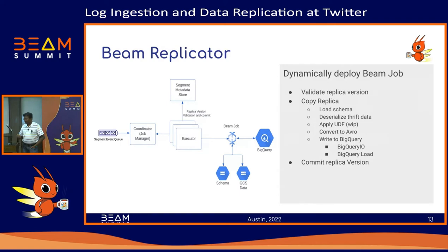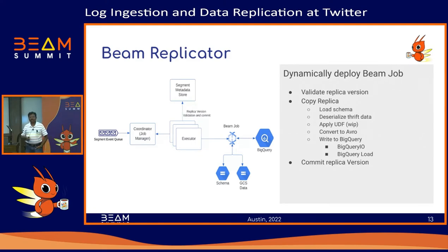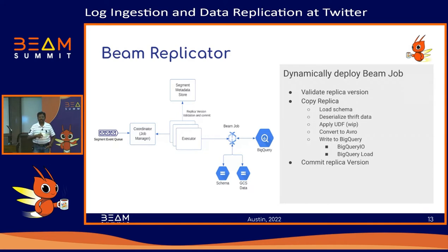Once we confirm we're working on the latest version, the Beam job gets deployed. The first thing it does is load the schema from a GCS bucket. Schema information in GCS gets updated whenever a user changes the schema for the data, and we dynamically load it — so users don't need to redeploy their pipelines. Our schema is stored as Thrift; we generate Java and Scala files from it. This job loads the Java schema and converts it to Avro schema for ingestion to BigQuery.